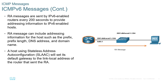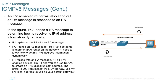If you plug in a device and for whatever reason it doesn't go out and try to discover the router by itself, the router will advertise itself within 200 seconds. An IPv6-enabled router will also send out an RA message in response to an RS message. PC1 sends an RS message to determine how to receive its IPv6 address information dynamically, and R1 replies to the Router Solicitation with an RA message.